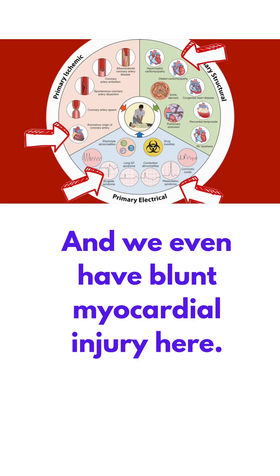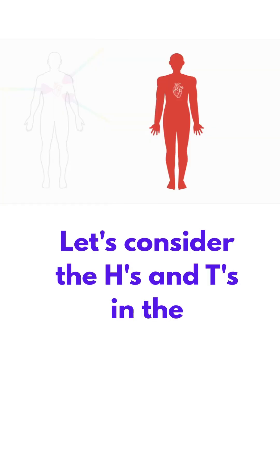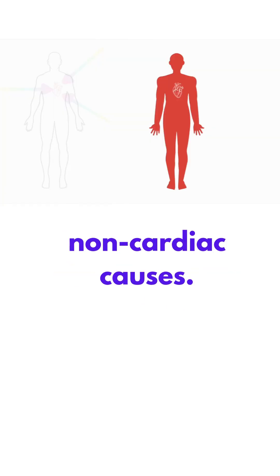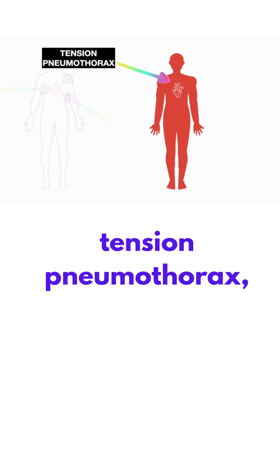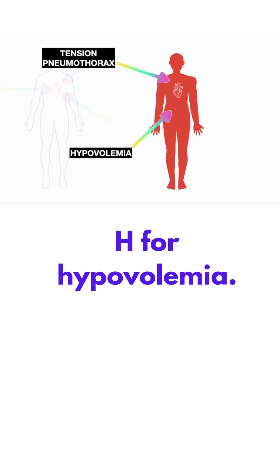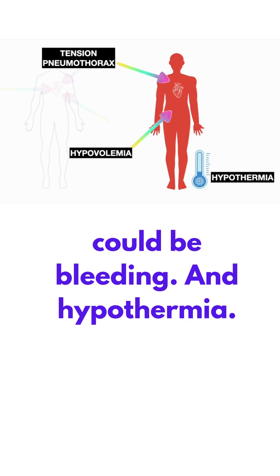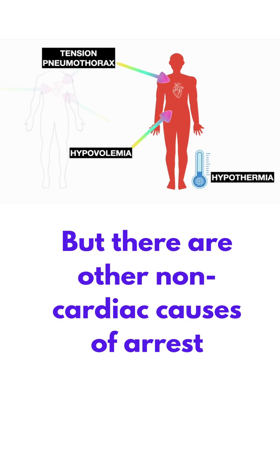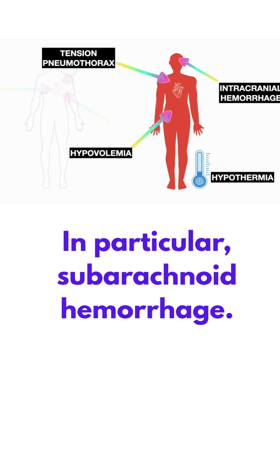We even have blunt myocardial injury in the form of commotio cordis, which we'll come back to. Turning to the H's and T's in the non-cardiac causes: they include T for tension pneumothorax, H for hypovolemia — pointing to the abdomen because we could be bleeding — and hypothermia. But there are other non-cardiac causes of arrest, like intracranial hemorrhage, in particular subarachnoid hemorrhage.